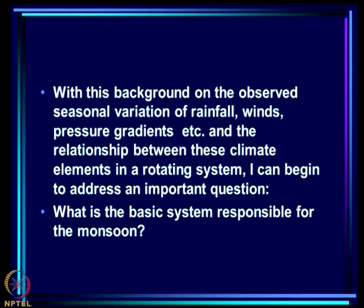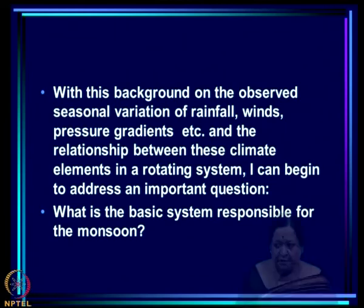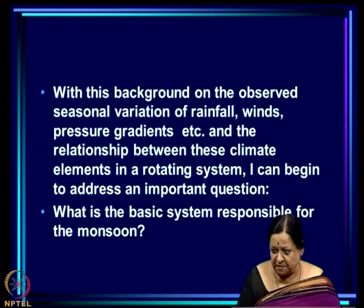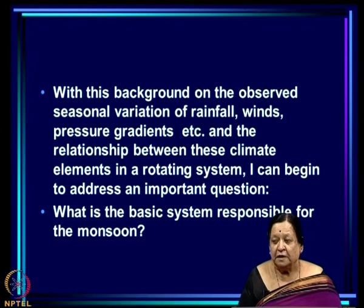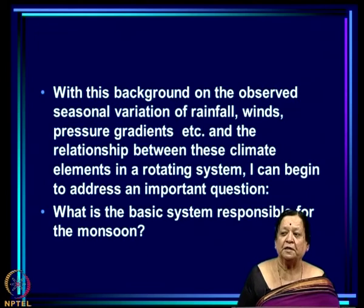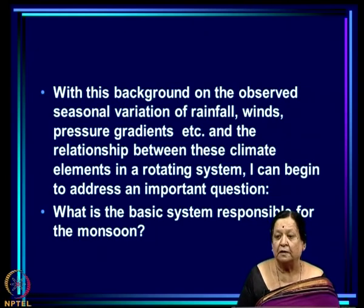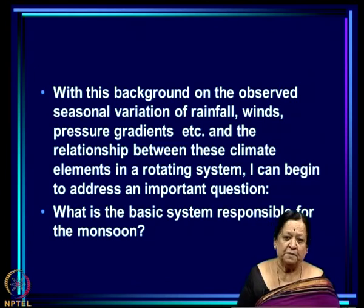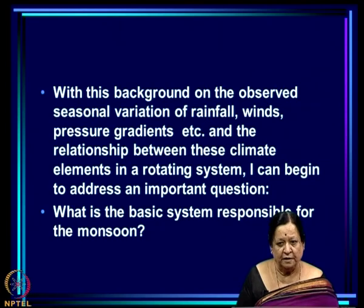We now have the background to pose the central question: what is the basic system responsible for the monsoon? Only by identifying that system will we be able to propose hypotheses for understanding the variability of the monsoon, test those hypotheses with models, and incorporate the right physics to predict monsoon variability. With all this background in rotating fluids and clouds in the tropical atmosphere, we are ready to embark on the central problem of this lecture course in the next lecture.